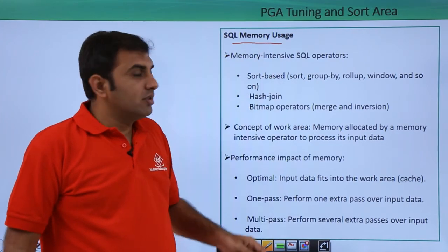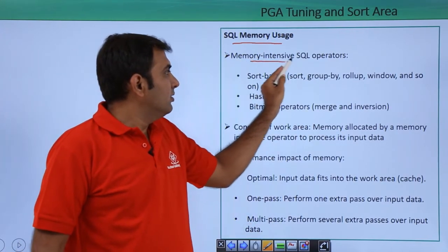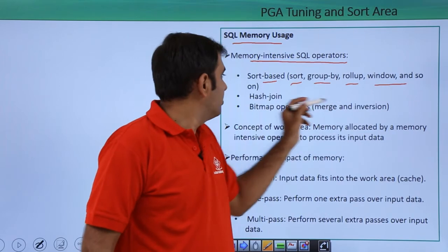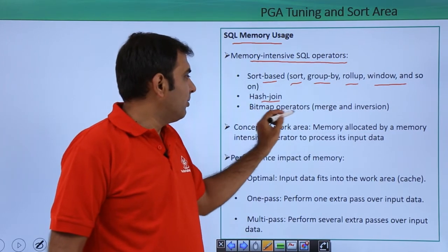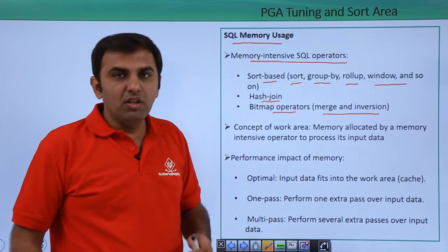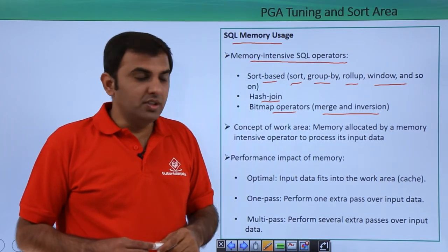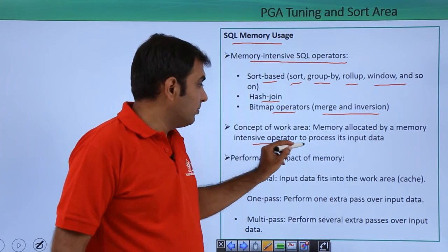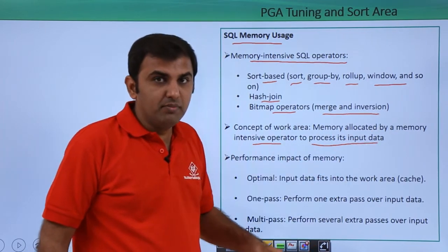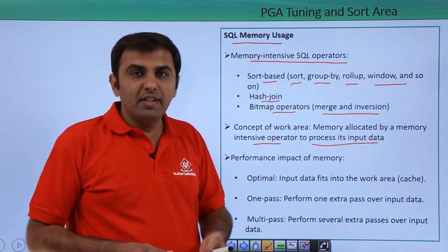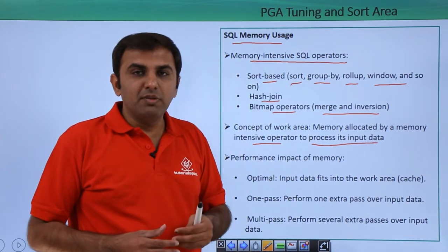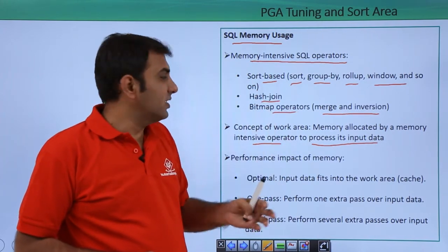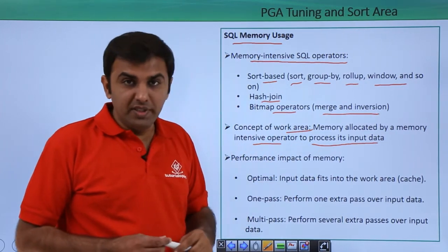SQL memory uses: the memory-intensive SQL operators are the sort-based operations — whenever you are doing sort, group by, rollup, windows, hash join, bitmap operations, merge, and inversion. All these things are done under the PGA. The concept of a work area is the memory allocated by a memory-intensive operator to process that input data — data retrieved from the database file to the database buffer cache and given back to the PGA. Some operations like sort-based operations are done under the work area, that is your PGA.